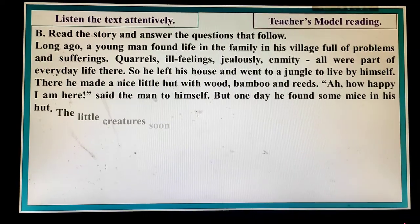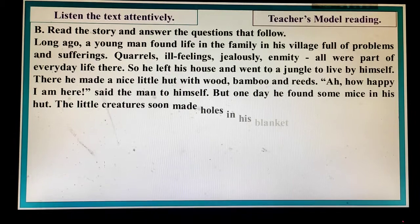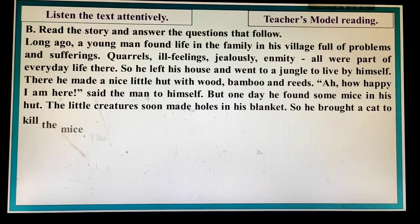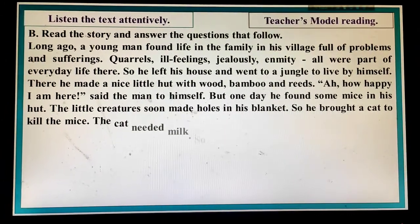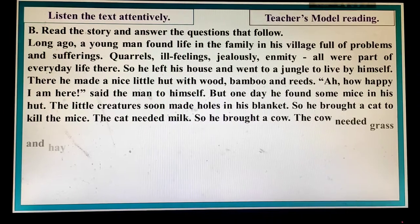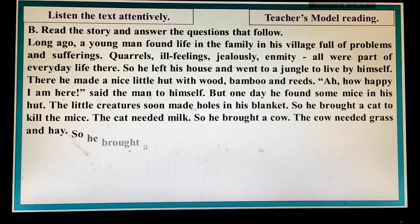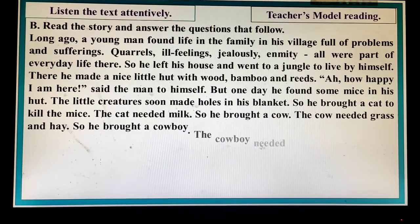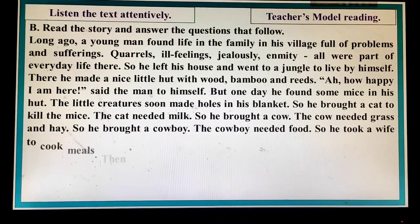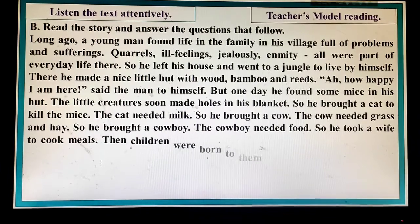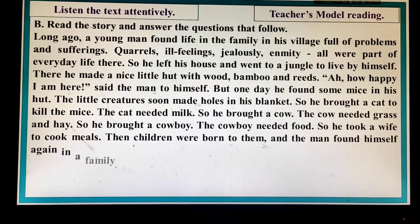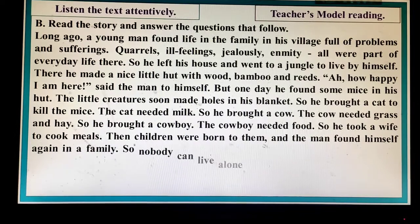But one day he found some mice in his hut. The little creatures soon made holes in his blanket. So he brought a cat to kill the mice. The cat needed milk, so he brought a cow. The cow needed grass and hay, so he brought a cowboy. The cowboy needed food, so he took a wife to cook meals. Then children were born to them, and the man found himself again in a family.